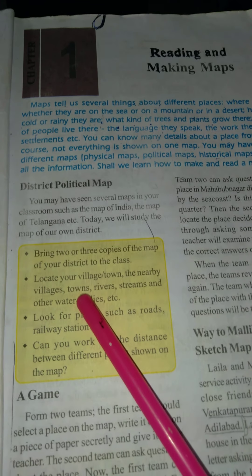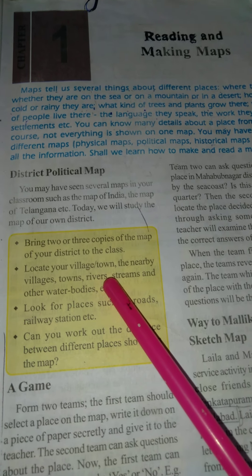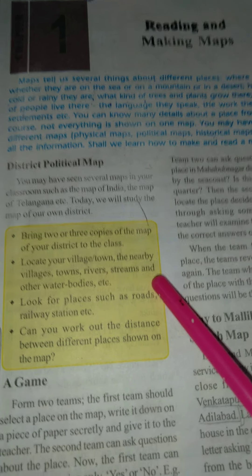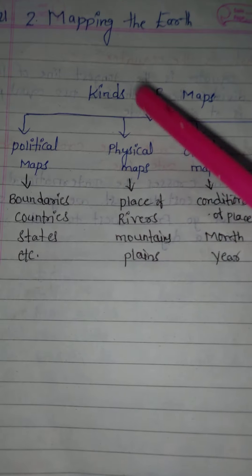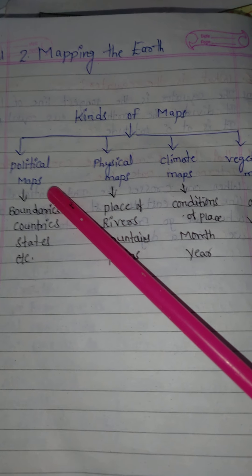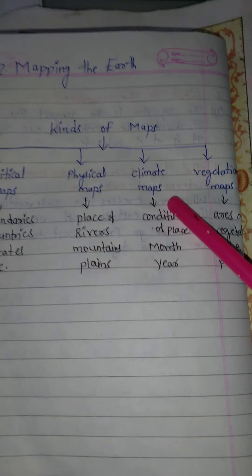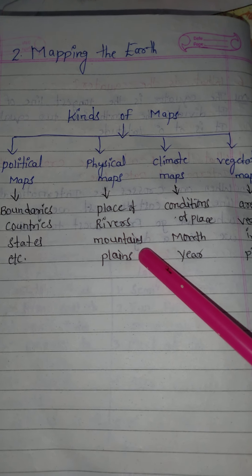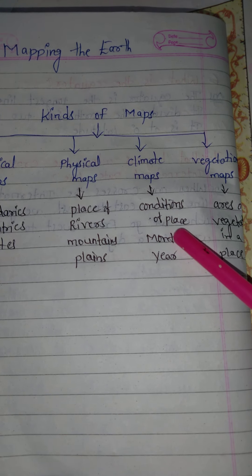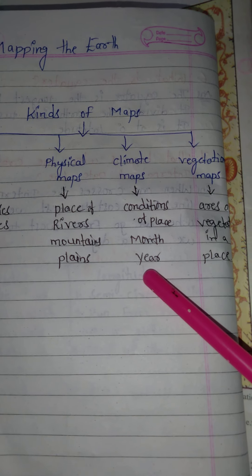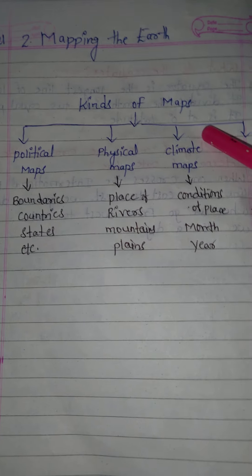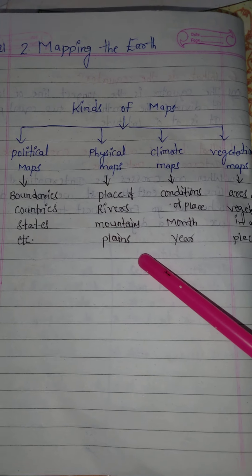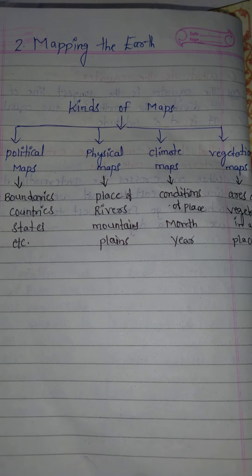I hope you can understand today's topic. Your homework is to write about rivers, mountains, plains, condition of place in month of year, and area of vegetation in a place — these kinds of map details you should write and send. I hope you can understand today's topic. Thank you, students.